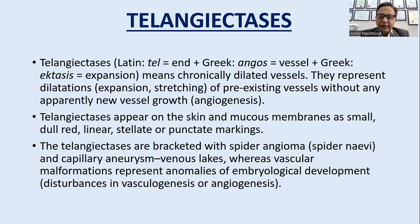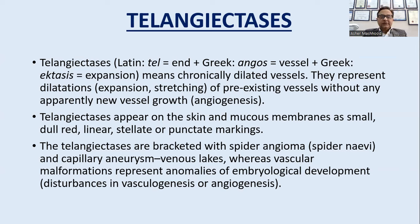Telangiectasias appear on skin and mucous membranes as small, dull red, linear, stellate or punctate markings. They are bracketed with spider angiomas or spider nevi and capillary aneurysms or venous lakes. Whereas vascular malformations represent anomalies of embryological development, due to disturbance in vasculogenesis and angiogenesis — anomalies in arteries and veins that date back to the embryological era.